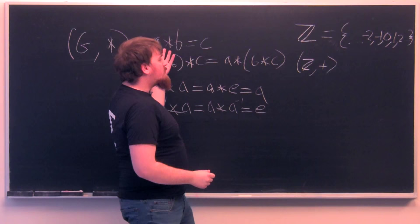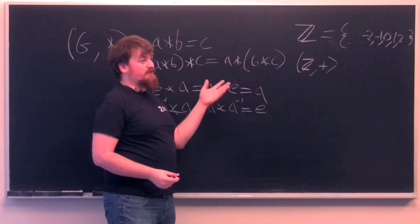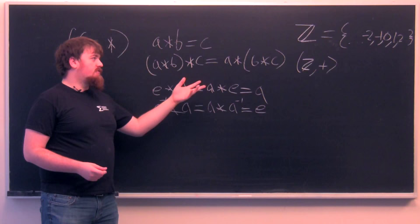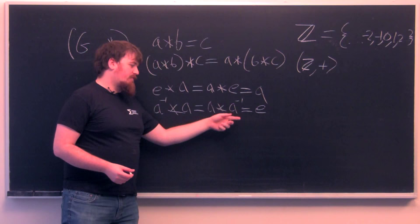So we think about this. Any integer plus another integer is also an integer. We know that the associative law holds for addition. Our identity is zero. Zero plus anything is equal to anything plus zero is equal to the first thing. And inverses, each number has a negative. So negative five plus five equals five plus negative five equals zero. So we can see that Z is a group.